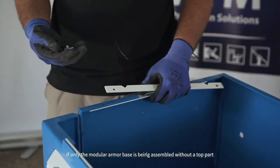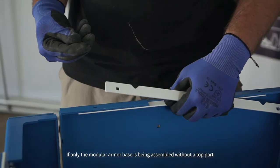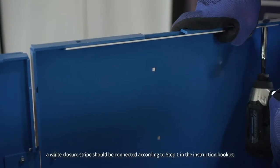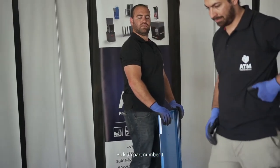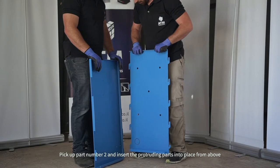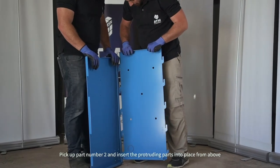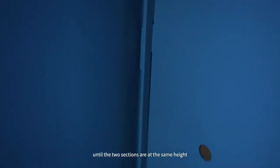If only the modular armor base is being assembled without a top part, a white closure strip should be connected according to step one in the instruction booklet. Pick up part number one. Pick up part number two and insert the protruding parts into place from above until the two sections are at the same height.